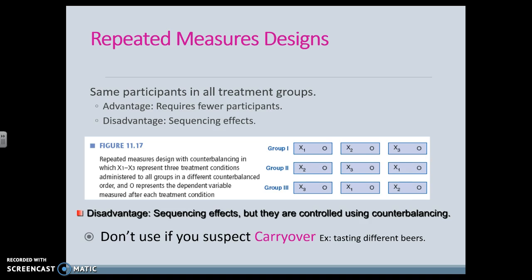We can do a repeated measures design. Here we have three groups and everyone in all three groups gets all three treatments, but in different orders. Classroom one gets treatment one then a test, treatment two then a test, treatment three then a test — maybe three different reading interventions. Group two gets treatment two, then three, then one. The hardest part is the carryover effect. A reading intervention probably isn't appropriate here because this treatment carries over to the next. There's a study on tasting beers: three groups, three beers, pick your favorite — the second beer was never chosen. They either liked the first or the last, and by the third one, you've got a good amount of alcohol in you, so you have to worry about that carryover effect.